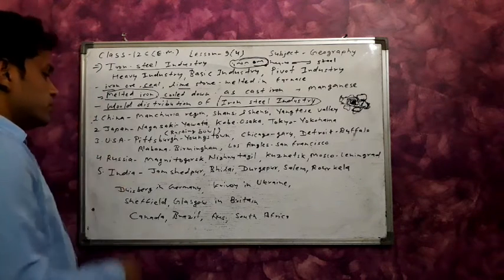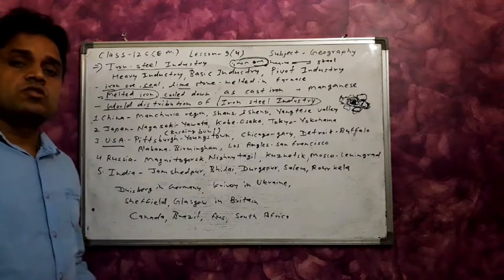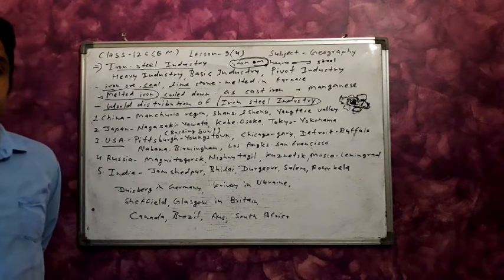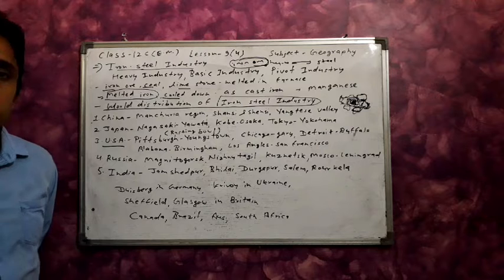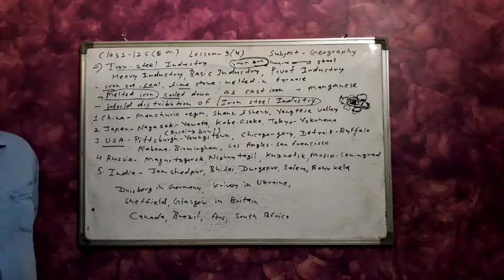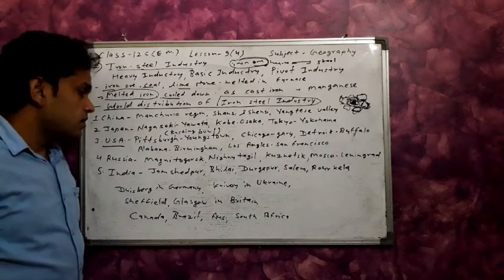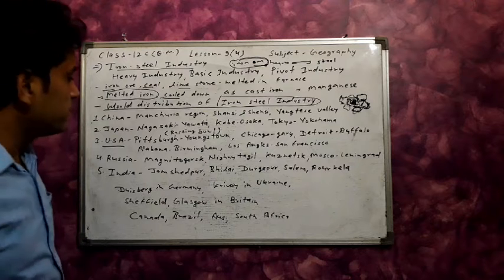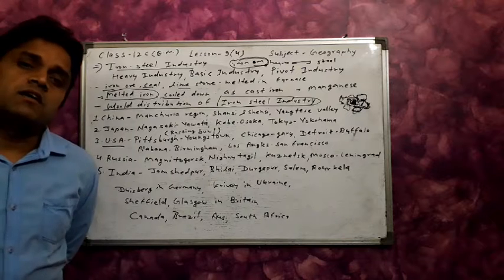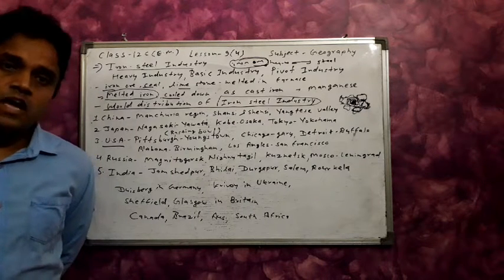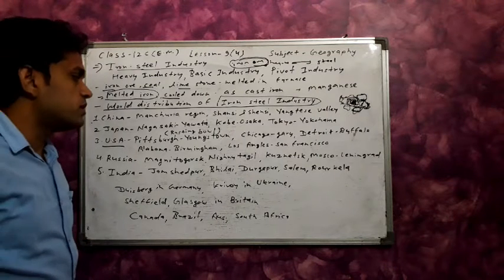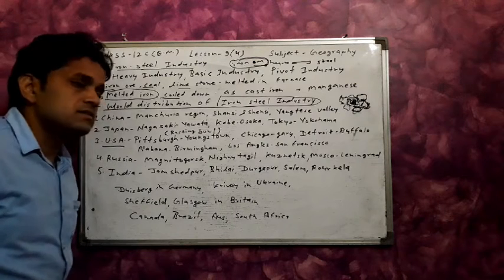In the USA, iron ore and coal are found, and the transportation and communication systems are well developed, making iron and steel industry establishment very beneficial. The Pittsburgh-Youngstown region was the first to develop iron and steel, but now other industries have taken its place, so Pittsburgh is known as the Rust Bowl.